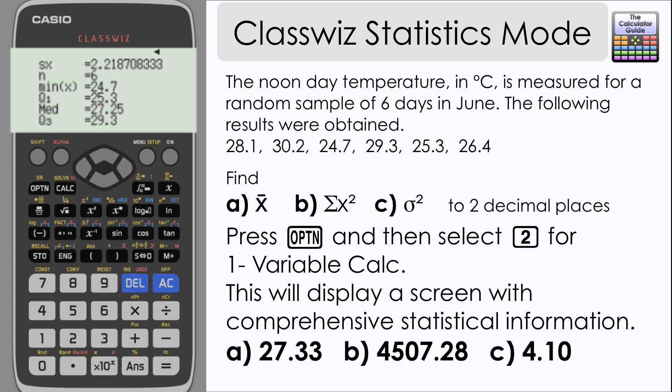We've also got the minimum value, quarter one, the lower quartile, the median, quarter three, the upper quartile and the maximum value.